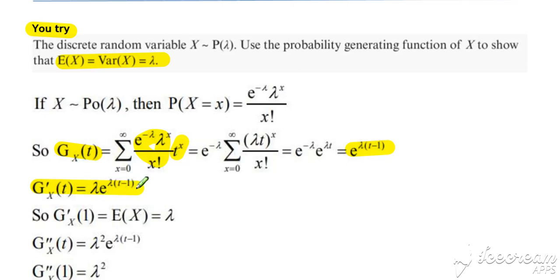Differentiating. So, e to the lambda t minus 1 differentiates to lambda times e to the lambda t minus 1. Substitute 1 in to that formula. If we put 1 in there for t, then we get lambda times e to the 0, which is just equal to lambda. So, your expected value for X for the Poisson is proved to be equal to lambda.